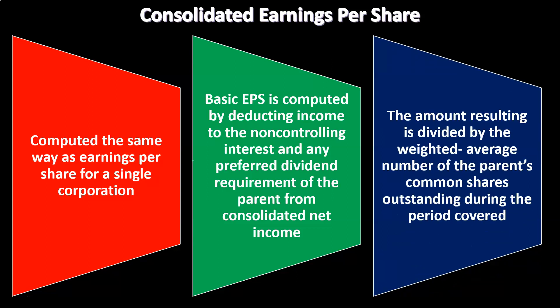The resulting amount is divided by the weighted average number of the parent's common shares outstanding during the period covered. It's a pretty straightforward calculation for the basic earnings per share. We do have practice problems on it, so if you want to brush up on calculating the basic earnings per share, we have that available.